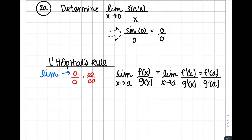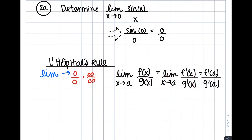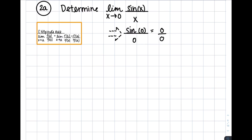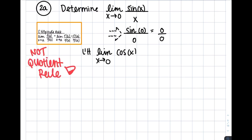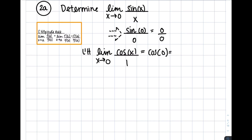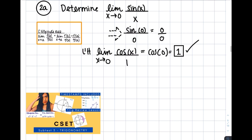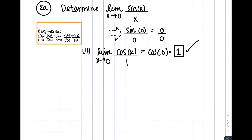L'Hôpital's rule states that in these situations, we'll want to take the derivative of the top and of the bottom separately, and then try plugging in the value. We'll repeat this as many times as needed until we no longer have 0 over 0 or infinity over infinity. Since we ended up with 0 over 0, we take the derivative of the top and the bottom separately — this does not mean the quotient rule. After simplifying, we get cosine of x, and when we plug in 0, we get 1, which is our final answer. If you need a trig review, check out part 1 of the CSET subtest series — link in the description below.